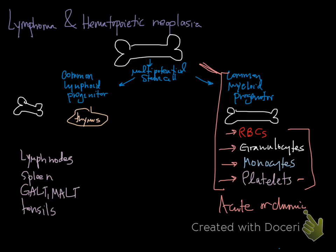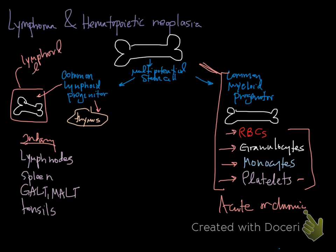Moving to the lymphoid side, the common lymphoid progenitor from the multi-potential stem cell can either remain in the marrow for primary differentiation or go to the thymus, and eventually it goes to the secondary lymphoid organs where maturation and education of lymphoid cells occurs. Lymphoid leukemias arise in the bone marrow and can be chronic — CLL — or acute — ALL. We did a boxer case of chronic lymphocytic leukemia; these start most commonly in the marrow, and classification is now more complex with flow cytometry and cytogenetics.